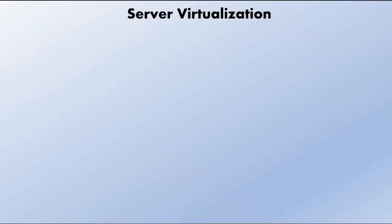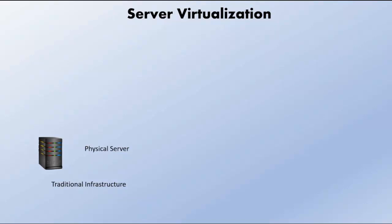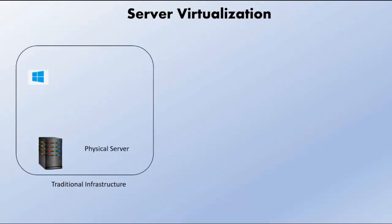In traditional infrastructure, when we used to install any operating system on any physical server, suppose we have one physical server and we want to install any operating system — such as Windows, Red Hat, CentOS, or even Mac — we had to install any one of these operating systems directly on the physical server. The limitation of this infrastructure is that at a time, only one operating system can run on this physical server.